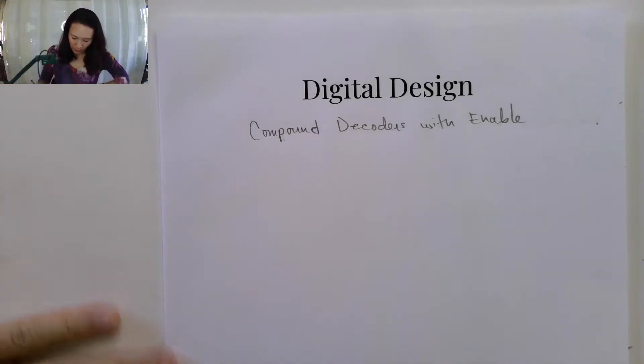Hi students, I wanted to show you how we can make larger decoders from smaller decoders. So I call these compound decoders. We're going to use this new idea called an enable line.